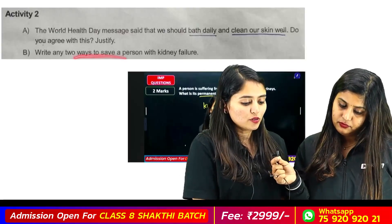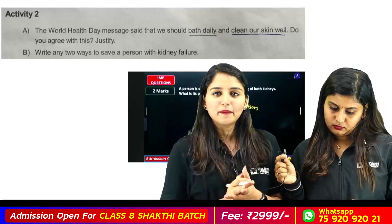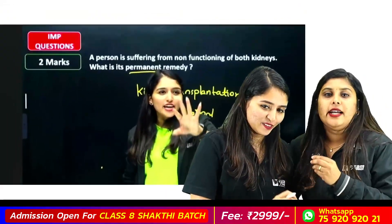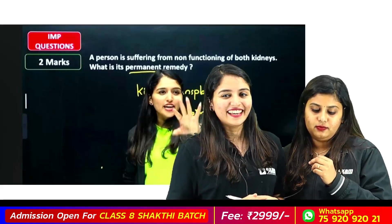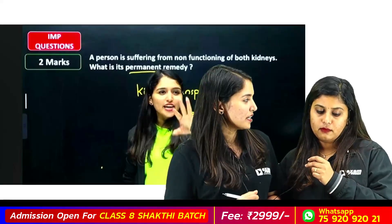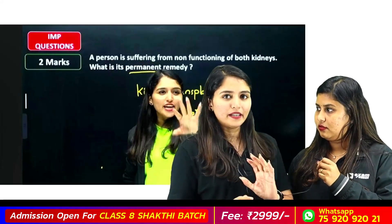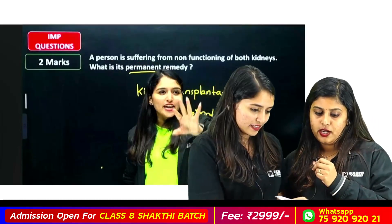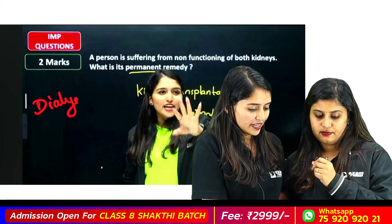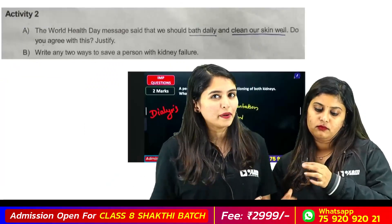Write any two ways to save a person from kidney failure. Kidney transplantation — that is one remedy, and it is a permanent remedy. Dialysis is the other method. Dialysis is temporary.